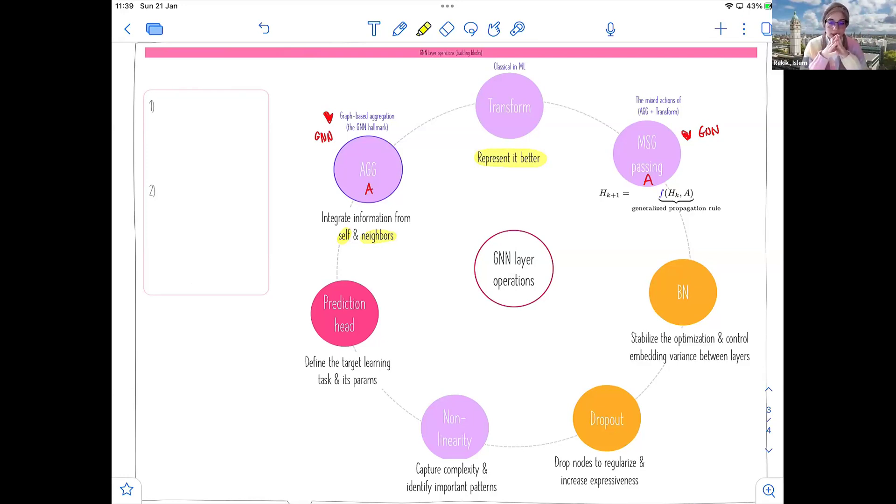How to represent better lies in how to transform, basically. It's how to transform better. Transformation is a very important concept that permeates both machine learning and deep learning, and now we use it in geometric deep learning, learning on non-Euclidean spaces, such as graphs. Now, we also have in GNNs the mixed actions of aggregation and transformation, and this defines what we call the generalized propagation rule to update the embedding. This message passing is used to update the embeddings. It could be the graph embedding, the node embedding, the edge embedding, any element of the graph or the graph itself. We want to do this update of the embeddings, the representation of the graph or elements of the graph.